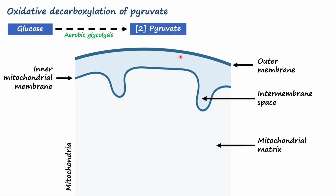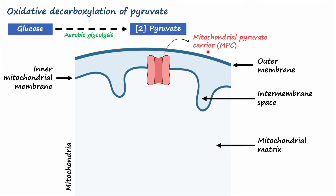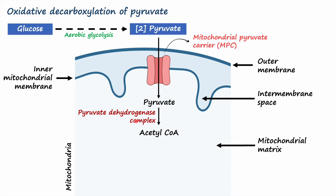Transport of pyruvate into mitochondria is accomplished by a specific transporter called the mitochondrial pyruvate carrier, also known as MPC. With the help of MPC, pyruvate crosses the inner mitochondrial membrane to enter the mitochondrial matrix. Once inside the matrix, pyruvate is converted into acetyl-CoA with the help of the enzyme pyruvate dehydrogenase complex, which is called a complex because it consists of three different enzymes.